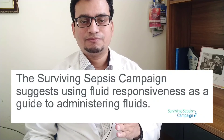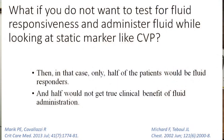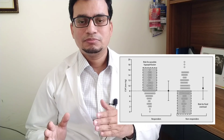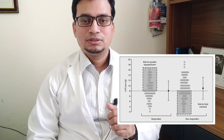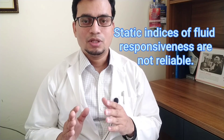Fluid responsiveness testing is an important concept. The Surviving Sepsis Campaign has adopted this concept and suggests that fluid responsiveness is very important to guide fluid administration. If you do not test for fluid responsiveness and instead administer fluid while looking at static markers such as central venous pressure, only half of the patients will be fluid responders and benefit from fluid, while the other half will not. Remember, CVP and PAOP — pulmonary artery occlusion pressure — are the most commonly used markers of right and left ventricular preload respectively, but both variables cannot reliably predict fluid responsiveness.